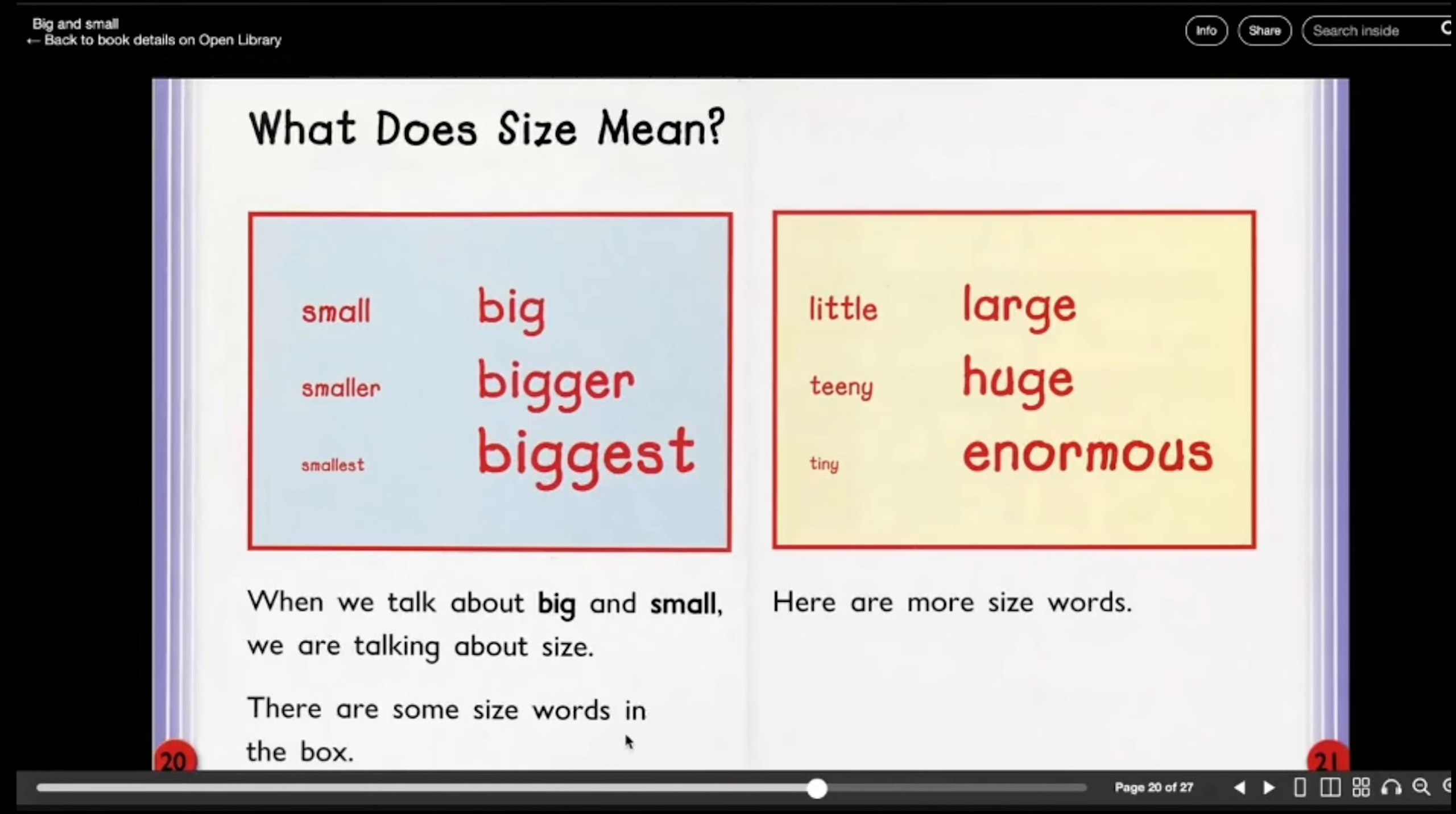What does size mean? When we talk about big and small, we are talking about size. There are some size words in the box: small, big, smaller, bigger, smallest, biggest. Here are more size words: little, large, teeny, huge, tiny, and enormous.